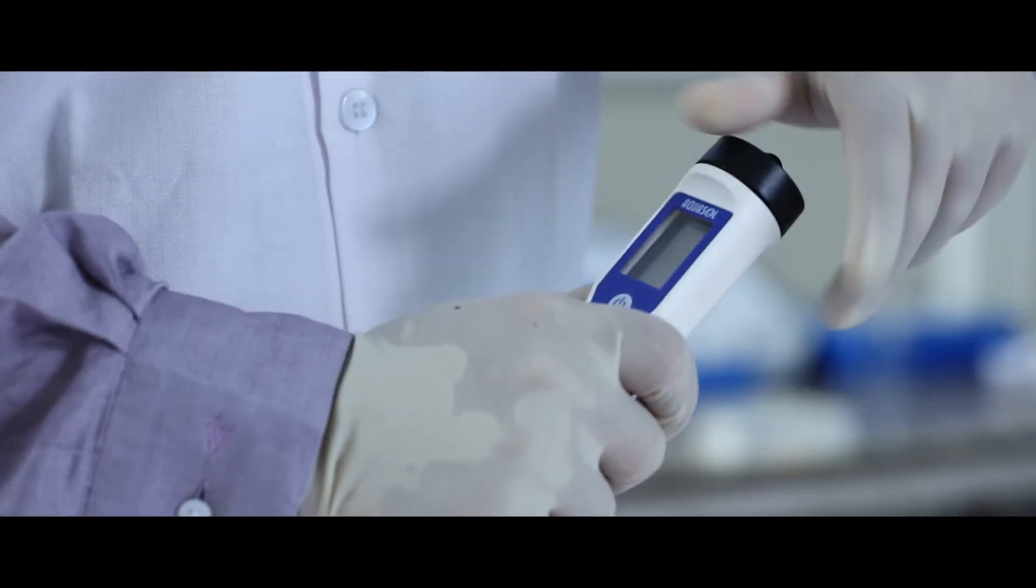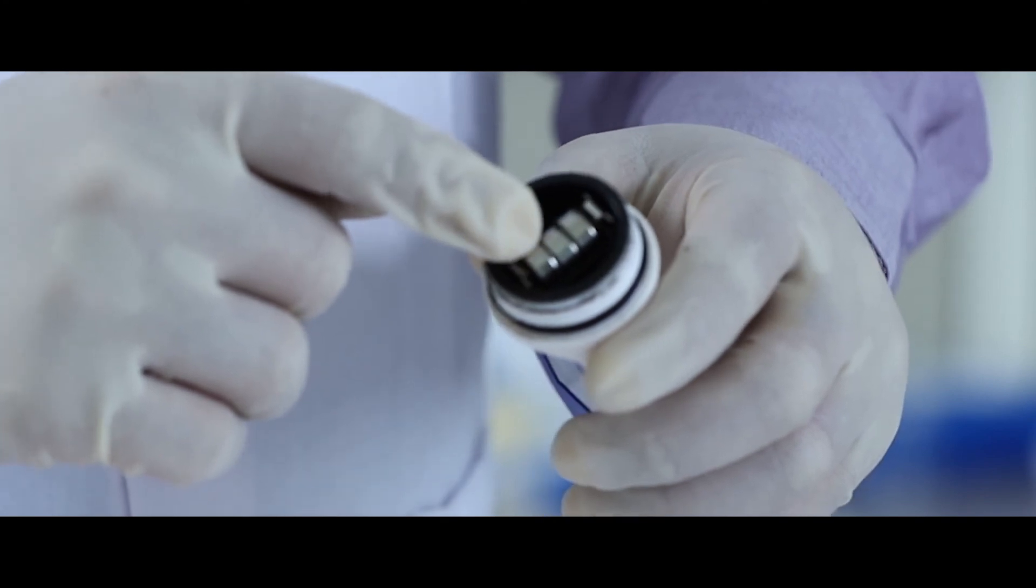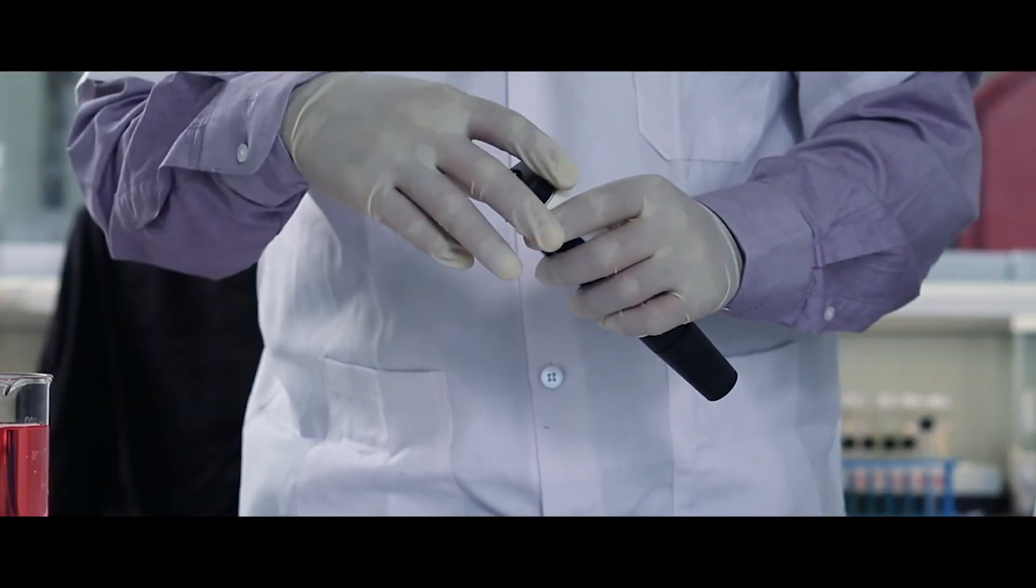To change the batteries, unscrew the battery compartment on the top. Note the polarities and replace the batteries. And screw the battery cap back.